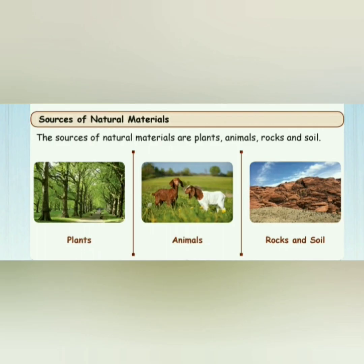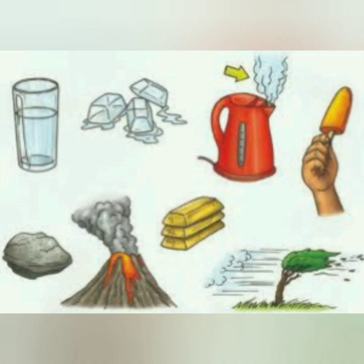Let us see the sources of natural materials. The sources of natural materials are plants, animals, rocks, and soil. We come across lots of materials around us in daily life, and each and every object is made up of a different material. In this lesson, we'll see about what matter is and its nature.